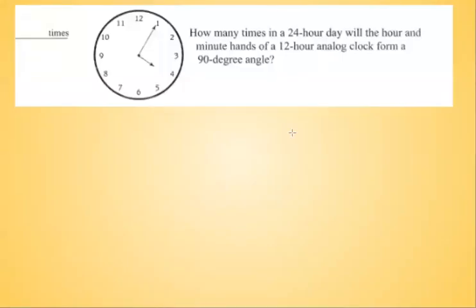Hello. So this is another Math Counts problem. This was a national sprint question number 25. The question asks: how many times in a 24-hour day will the hour and minute hands of a 12-hour analog clock form a 90-degree angle?